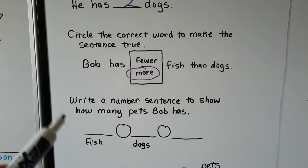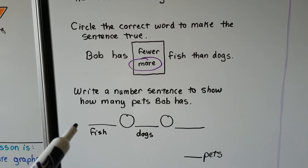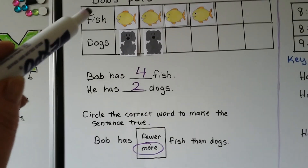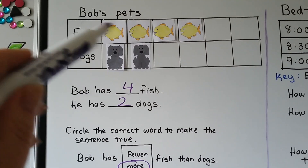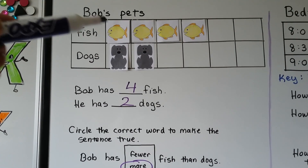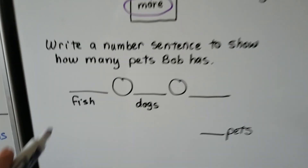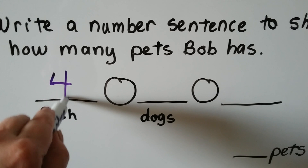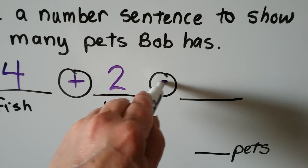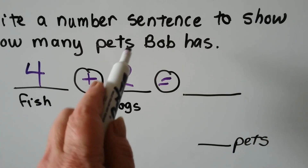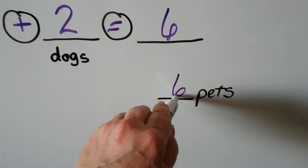Now we need to write a number sentence to show how many pets Bob has. He has fish and dogs — these are all his pets, so we need to add them together. He has four fish plus two dogs. Four plus two is equal to six. He has six pets.